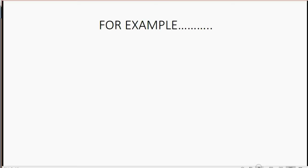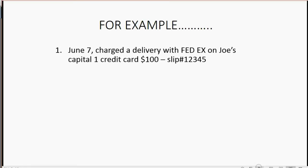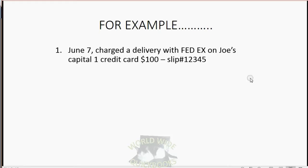For example, let's imagine on June 7th, Joe charged a delivery with FedEx on his Capital One credit card for $100, and the number that came out of the credit card machine onto the slip — which is his receipt and proof — is number 12345. Let's take a look at how we would record this.